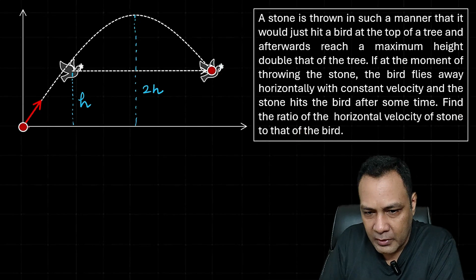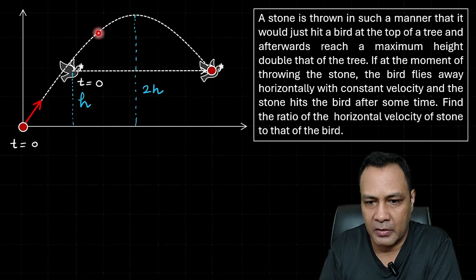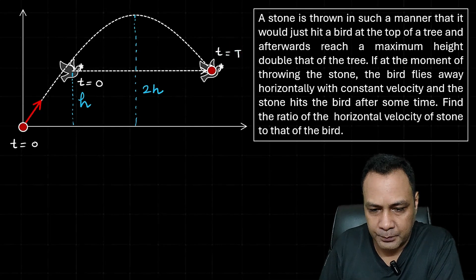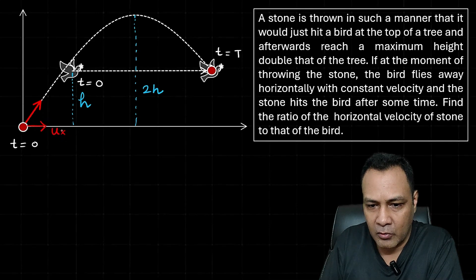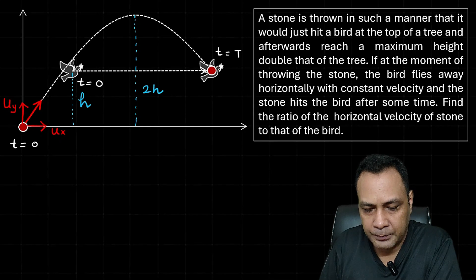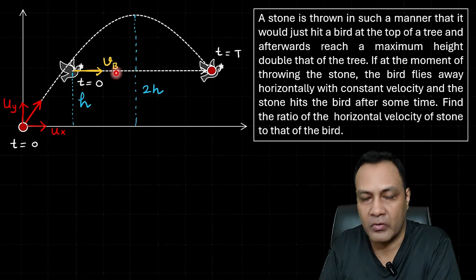Let t = 0 be the moment of throwing. The stone is thrown and at the same moment the bird flies. The stone takes time capital T to reach the bird, and the bird also travels for the same time T. The horizontal component of velocity of the stone is ux, which remains constant. The initial vertical component is uy, and the constant velocity of the bird is vb. We need to find the ratio ux to vb.